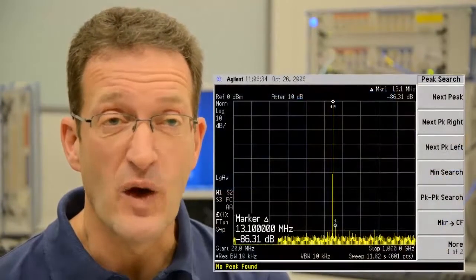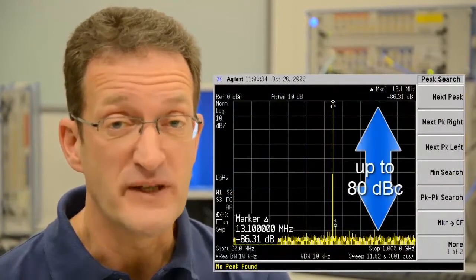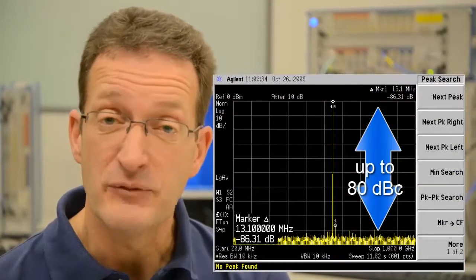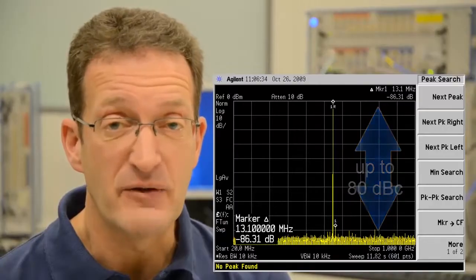Whether you're using the M8190A with or without digital upconversion, it provides best-in-class IQ and IF signal quality with up to 14 bits of vertical resolution and up to 80 dB of spur-free dynamic range.